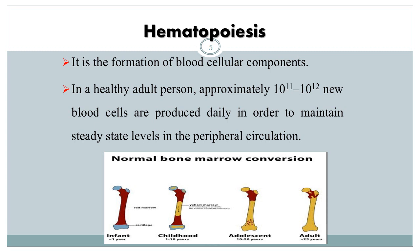During infancy, all bone marrow is hematopoietic — the red marrow or functioning marrow. During childhood, there is progressive fatty replacement of the marrow of long bones by yellow marrow or non-functioning marrow. By the age of 20 years, the marrow cavities of peripheral bones have stopped producing blood cells and become yellow marrow. The red or hematopoietic marrow in adults will be confined only to the axial or central skeleton, like ribs, vertebrae, sacrum, and the proximal ends of femur and humerus.